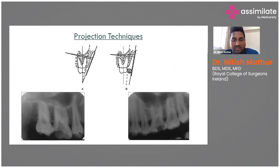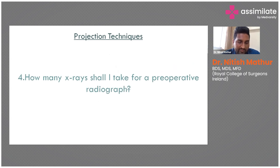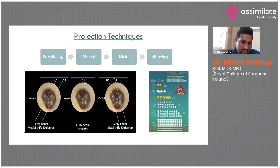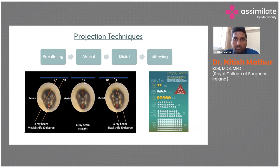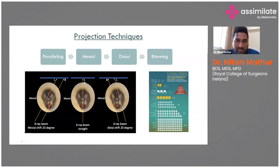A frequent question is: how many X-rays should I take before root canal treatment? There's no set rule, although it is recommended that for a multi-rooted tooth you take one paralleling, one mesial, one distal, and one bitewing to assess restorability. Since there is never a radiation danger with intraoral radiography — especially digital radiography — you can take as many as needed. A fun fact: flying from LA to New York gives 20 times more radiation exposure than a dental X-ray. But you need at least these four: paralleling, mesial, distal, and bitewing.